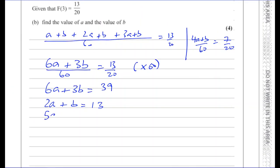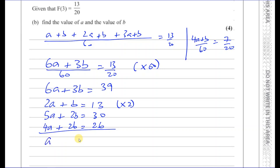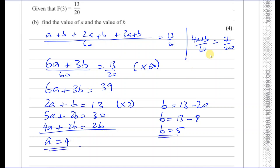We have 5a plus 2b equals 30. Multiplying 2a plus b equals 13 by 2 gives 4a plus 2b equals 26. Subtracting the two equations: a equals 4. Then b equals 13 minus 2a equals 13 minus 8, so b equals 5. Therefore a equals 4 and b equals 5. That's part B done.